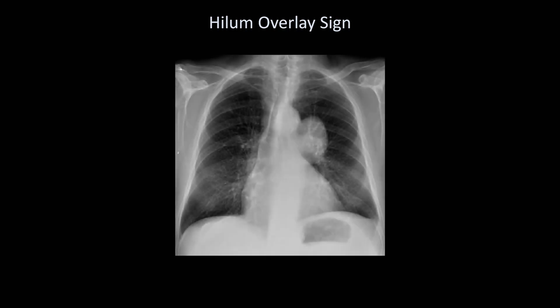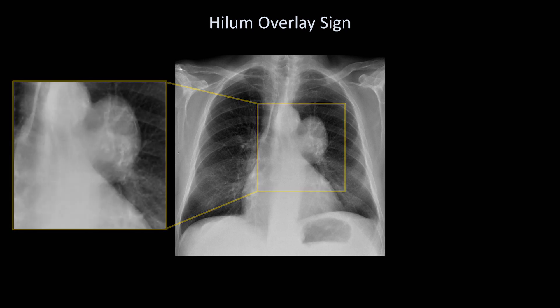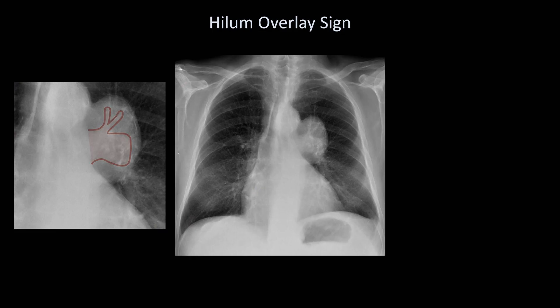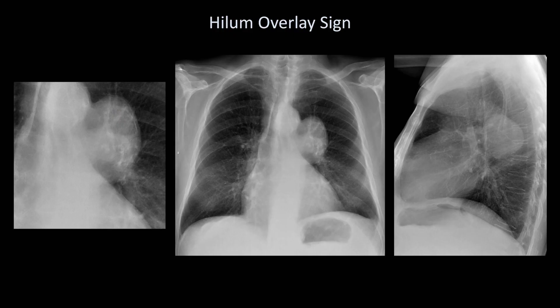I will end this lesson by talking about how one can use the hilum overlay sign to distinguish a hilar mass from one anterior or posterior to it. Consider this film, which has an obvious mass in the vicinity of the left hilum. When a mass arises from the hilum, the adjacent pulmonary vessels will become obscured. If the pulmonary vessels are still visible through the mass, the mass is not in the hilum. Zooming in, you can still see the outline of the left pulmonary artery. Checking the lateral film confirms that the mass is posterior to the hilum. To diagnose the cause, note a very thin rim of peripheral calcification, meaning either a vascular structure or a cyst — in this case, it was a saccular aortic aneurysm.